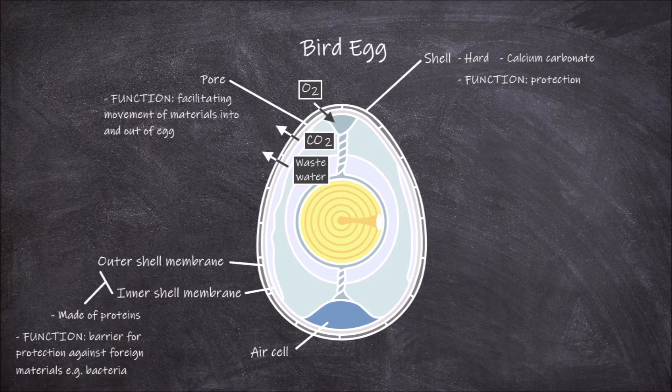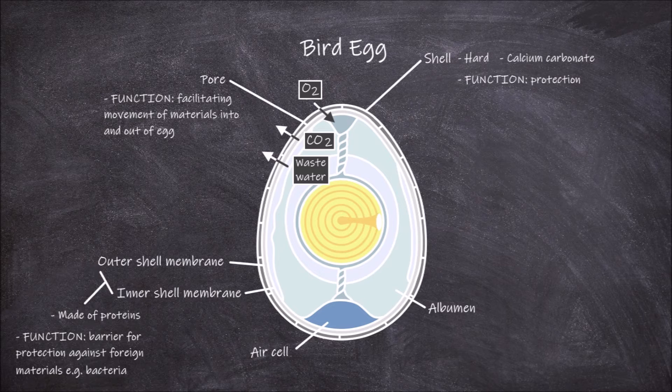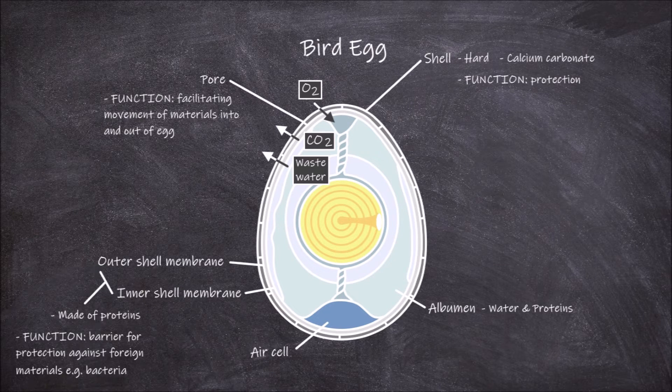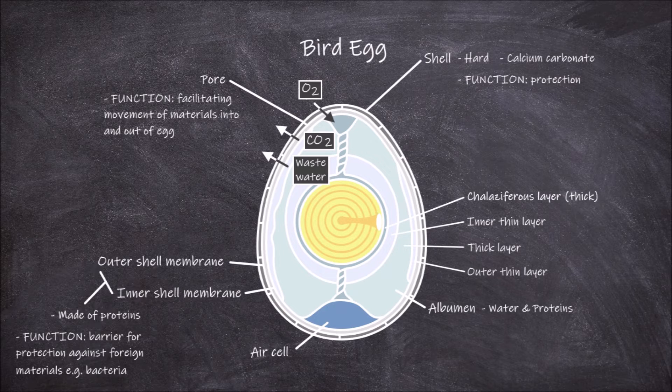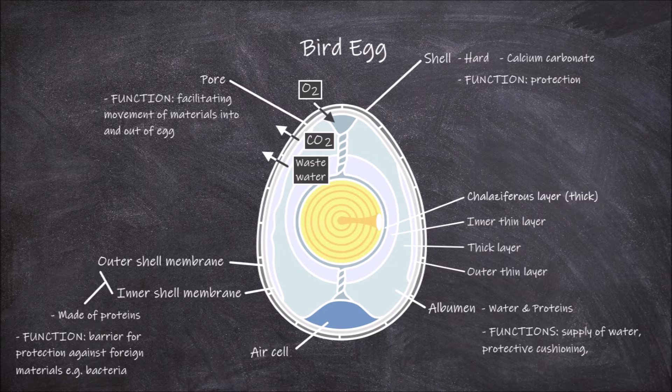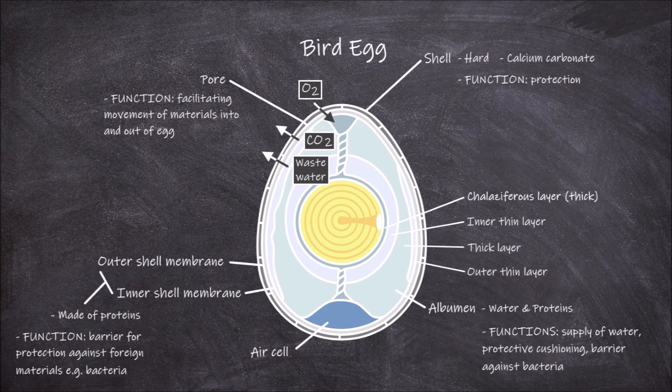Within this membrane is a clear liquid known as the albumin. The albumin consists of water and proteins but does not contain any fats. It is made up of four alternating layers of thick and thin albumin. The innermost layer is a thick layer known as the chalaziferous layer, followed by a thin layer, then a second thick layer, then a second thin outer layer. The albumin functions in being a supply of water and a range of different proteins to the growing embryo. It also functions in giving a protective cushioning layer and stopping any bacteria from reaching the yolk and embryo.